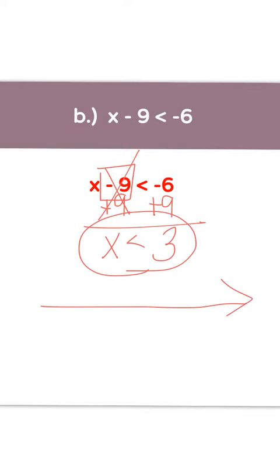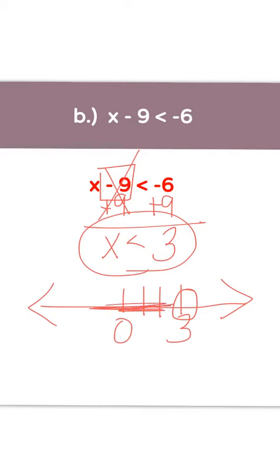Now draw your number line with 0 and 3. The circle goes at the 3. The sign is less than — there is no equal to, so it stays an open circle. The arrow goes less than, or to the left. Your answer is an open circle at 3 with an arrow going to the left.